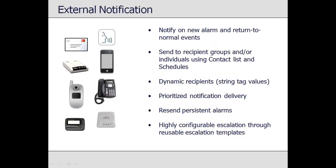Top View supports multiple methods for delivering alarm and return-to-normal event messages to recipients. Messages can be delivered to pre-defined lists called recipient groups, or individual contacts. Within recipient groups, contacts can be assigned schedules so that messages are only received while the recipient is at work. Messages sent off-schedule can be queued and delivered once the recipient is back. Top View can prioritize delivery of messages, making sure the most important alarms are delivered first, and can resend alarms that persist for a user-defined period of time.